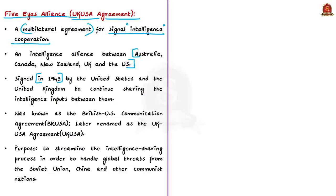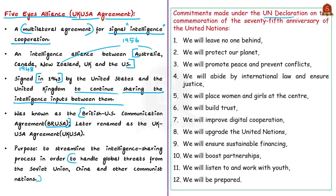In 1943, the United States and United Kingdom signed an agreement to continue sharing intelligence inputs between them, known as British-US Communication Agreement, shortly called BRUSA. This was later renamed UK-US Agreement. The purpose was to streamline intelligence sharing to handle global threats from Soviet Union, China, and other communist nations. The addition of Canada, Australia, and New Zealand led to the Five Eyes Alliance. Canada became part in 1948, while Australia and New Zealand became part after eight years in 1956.